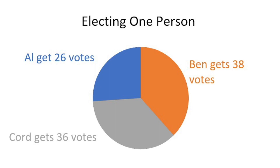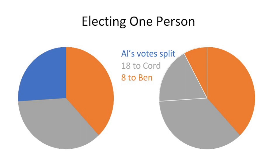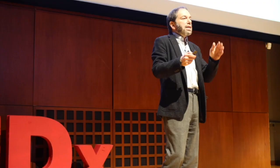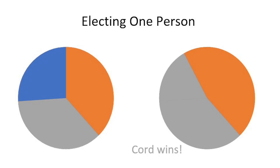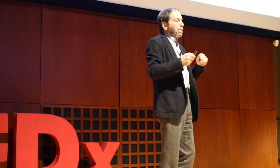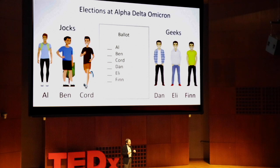In that runoff, rank-choice voting lets you do this right away. What's happening is Al's votes get divided and split between Cord and Ben — let's say 18 to Cord and 8 to Ben. All of a sudden, Cord ultimately has a majority of the votes and Cord is the winner. Rank-choice voting allows us to do this without doing a separate runoff.